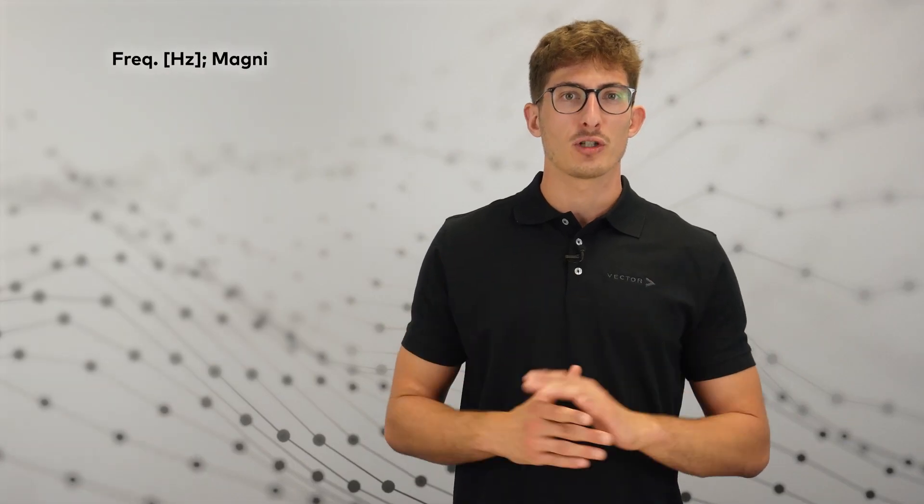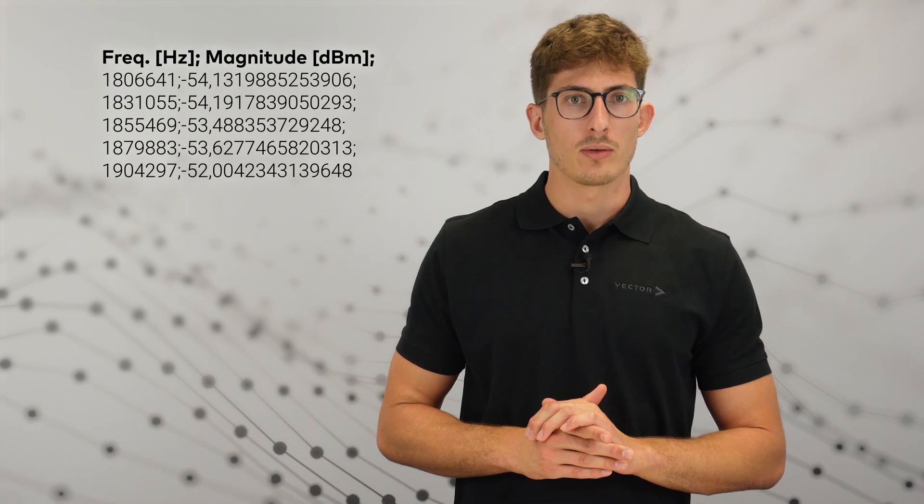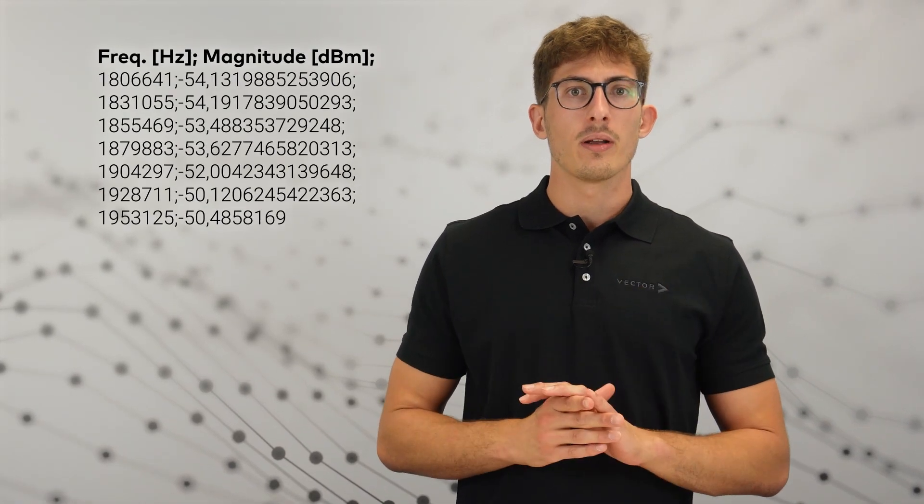Now that we have the correct settings, we can record the spectrum and export it as a CSV file. The exported file should be formatted like this. The Green File Configurator starts reading the values after the label 'frequency' and 'magnitude'. As a decimal separator, a comma or a dot can be used. Separate the values with a semicolon from each other.